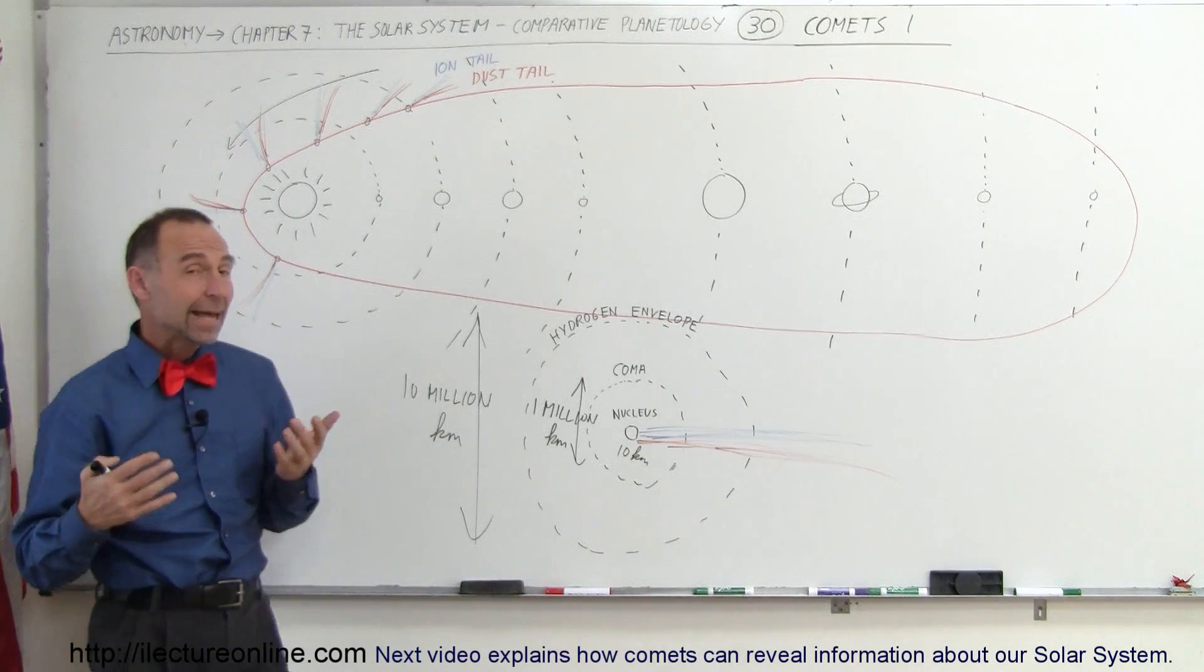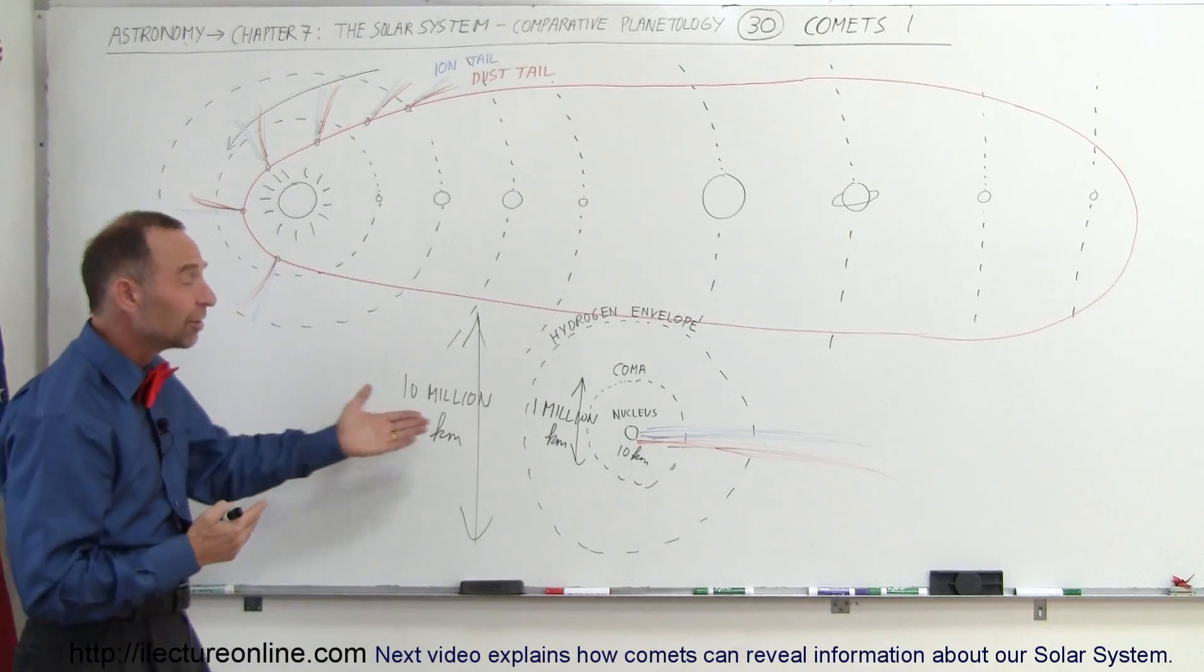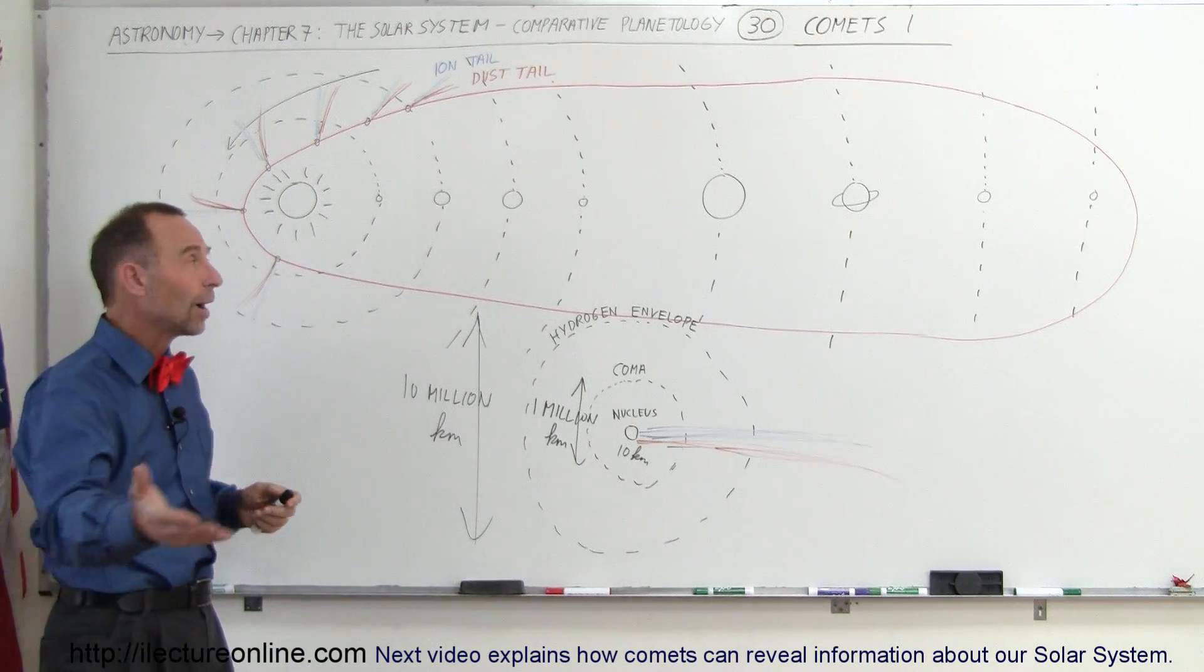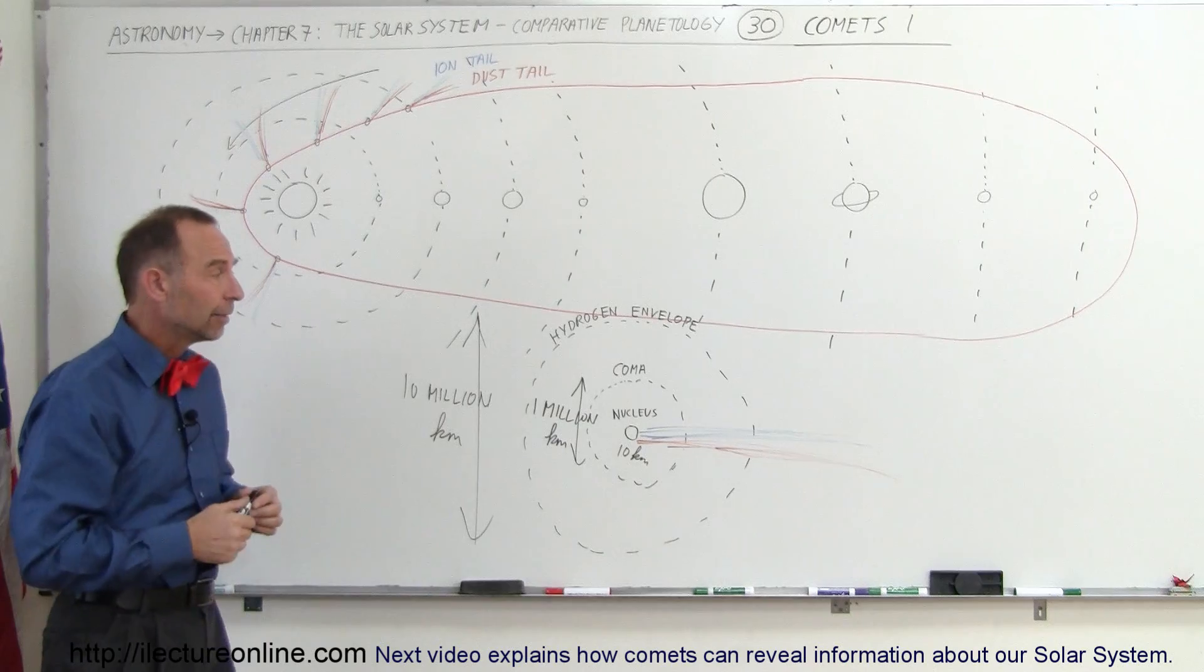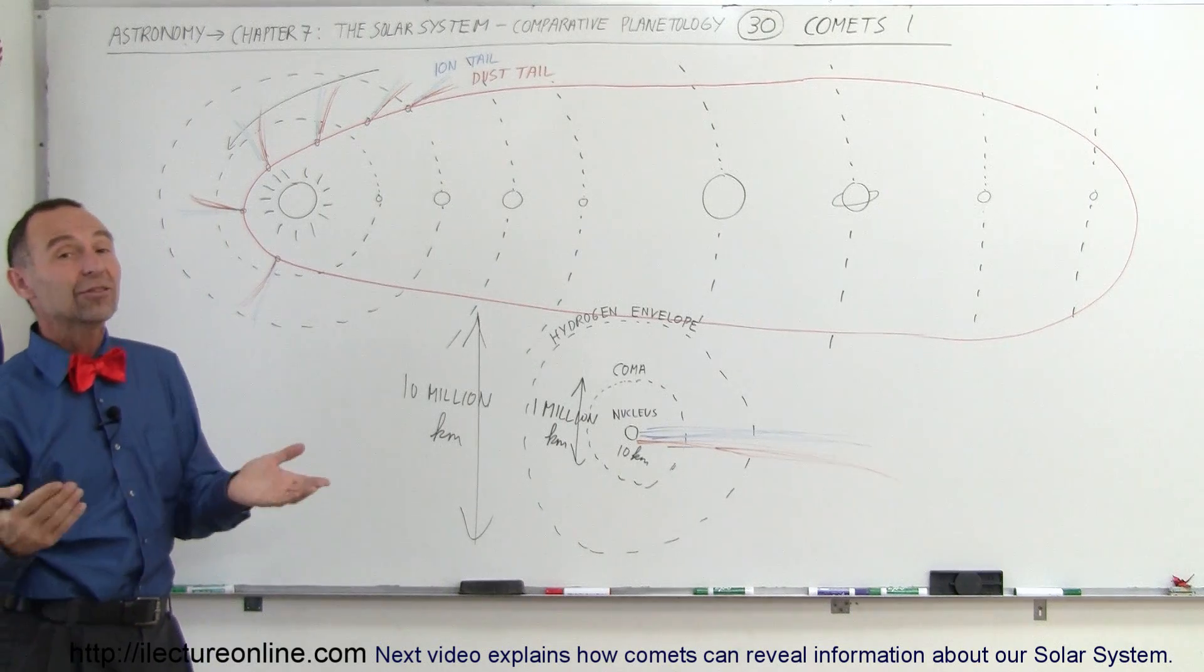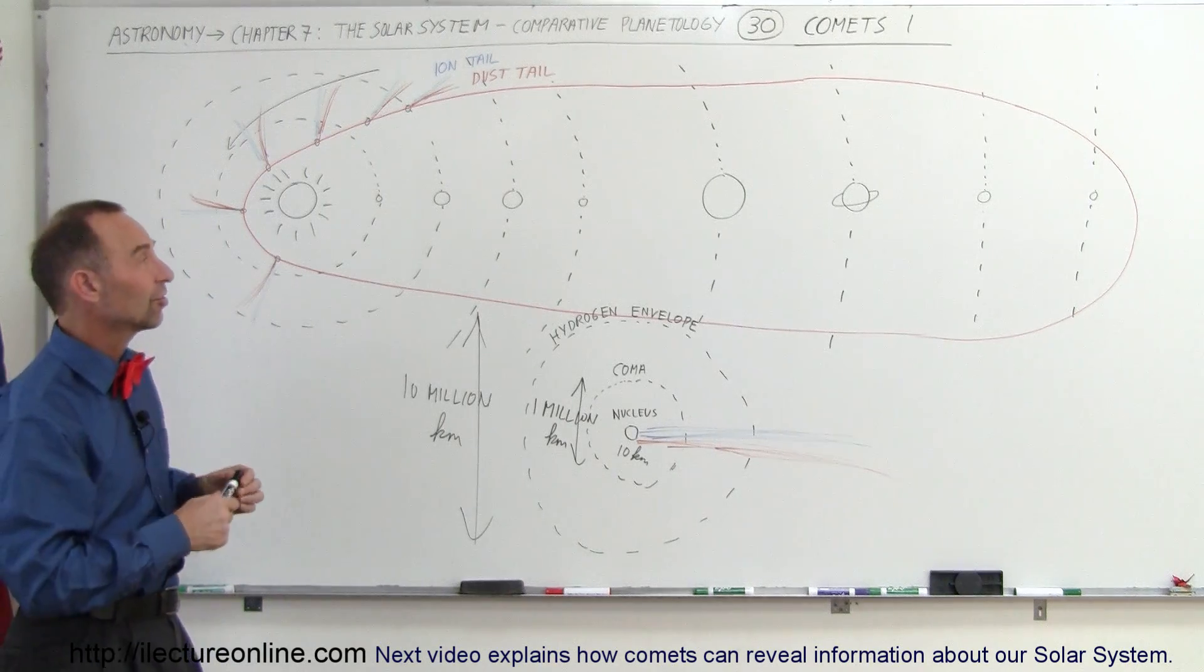So comets are interesting. There's probably billions of these things out there, and every once in a while, one of them will come down and visit us from nearby. Sometimes we've seen them before, like Halley's Comet, which comes back every 76 years.